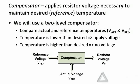In a two-level compensator, the output — the voltage applied to the resistor, V sub R — is either on or off. If the temperature is too low, meaning V_ACT is below V_ref, you turn the voltage to the resistor on to a high value and the resistor heats up. If your actual voltage is higher than your reference voltage, you want to cool the resistor off — you simply turn off V sub R so no voltage is applied, and the resistor dissipates heat to the ambient atmosphere and cools down.